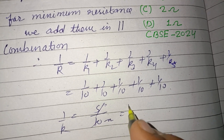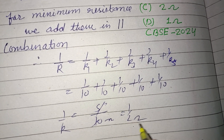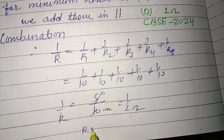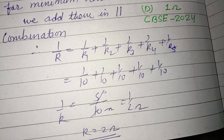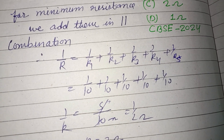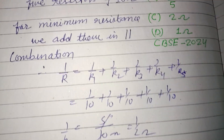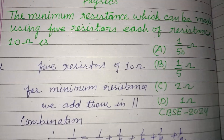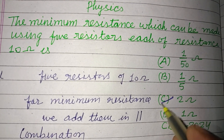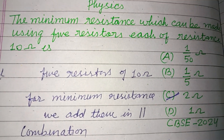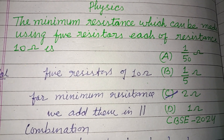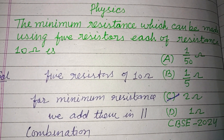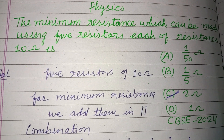This simplifies to 1/2 ohm, so R = 2 ohm. R = 2 ohm is the minimum resistance when we connect them in parallel combination. So C is the correct answer. I hope you got it.